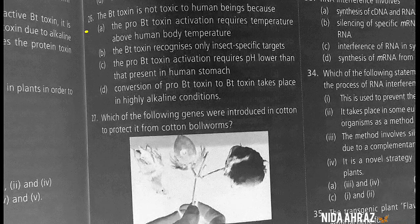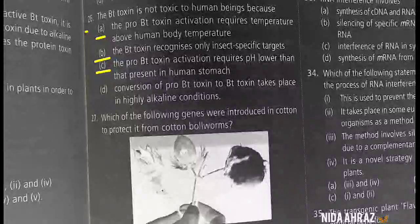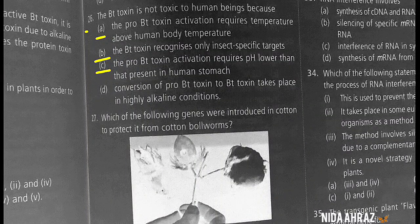The Bt toxin is not toxic to human beings because the pro-Bt toxin activation requires a pH lower than that present in the human stomach, or conversion of pro-Bt toxin to Bt toxin takes place in highly alkaline conditions. So the correct choice is option D.